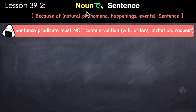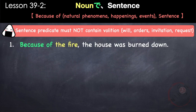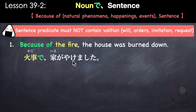The next pattern is noun + で, meaning 'because of.' The noun could be a natural phenomenon, happening, or event. Again, sentence two must not contain volition. Example: 火事で、家が焼けました。 Kaji de, ie ga yakemashita. Because of the fire, the house was burned down. This uses the intransitive verb yakemasu.